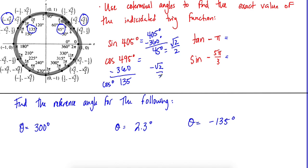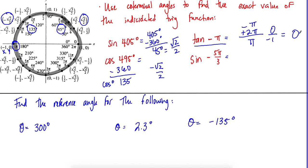For negative radian angles, add 2π. So negative π plus 2π equals π. At π, tangent is y over x, which is 0 over −1, which equals zero.